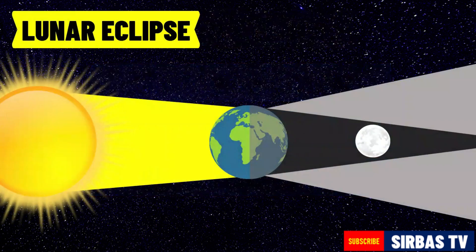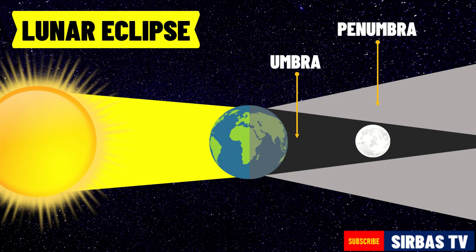As mentioned in our previous videos, shadows are not totally dark. The darker inner region of a shadow is called the umbra, and the gray outer region is called the penumbra.